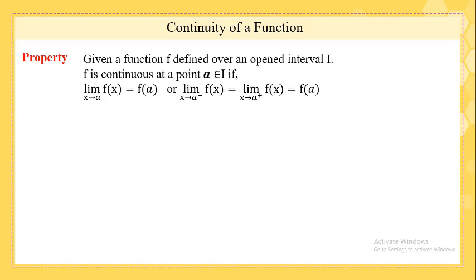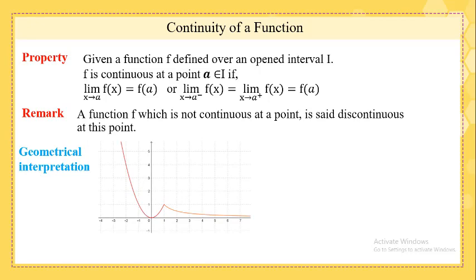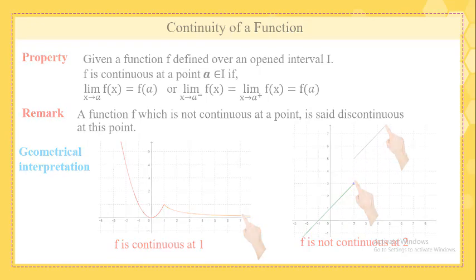Or left and right limits at a equal f(a). Remark: When the function is not continuous at the point, we say it is discontinuous. As a geometrical interpretation, let's see how F in our curve is continuous at x equals one, but F is not continuous at two. F is discontinuous at x equals two.